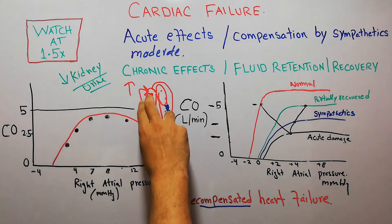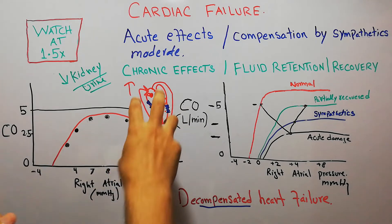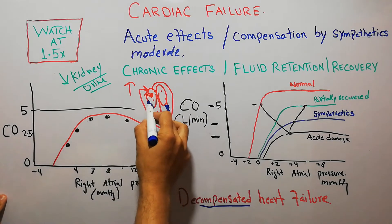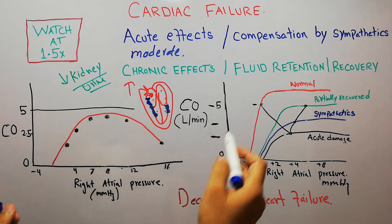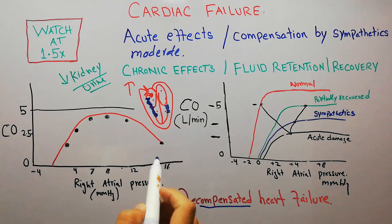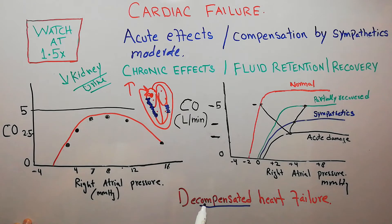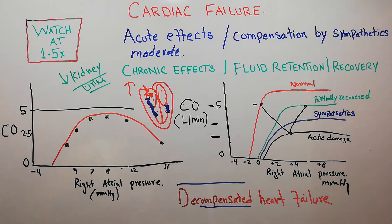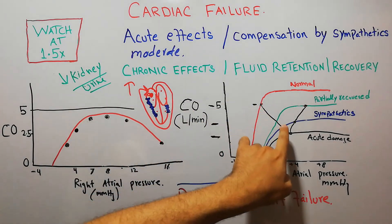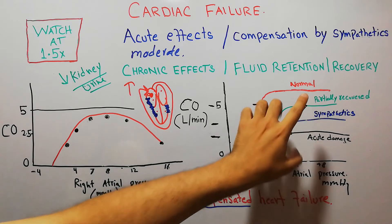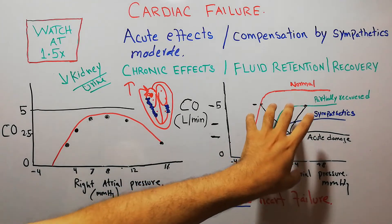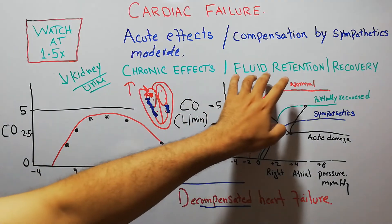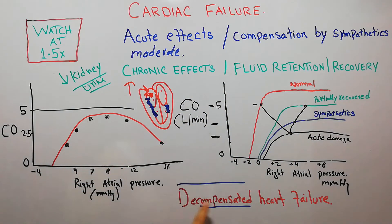Now, if the heart damage is very large — a big portion of the heart has been damaged due to obstruction of a large vessel — the heart will not be able to regain its normal cardiac output level. That form of cardiac failure is labeled as decompensated heart failure. If despite sympathetic compensation, fluid retention, and recovery the cardiac output cannot be brought back to normal, it is labeled as decompensated heart failure.